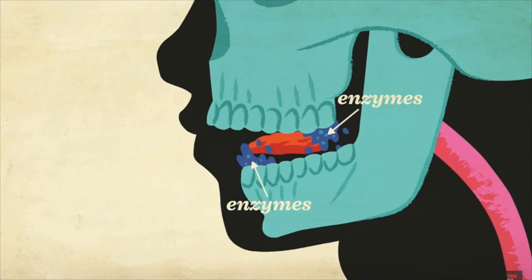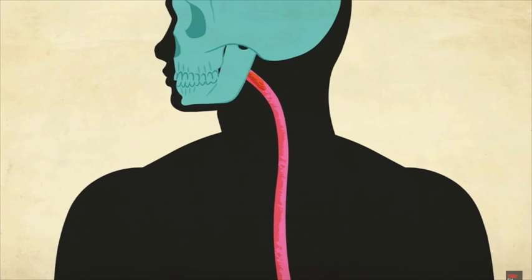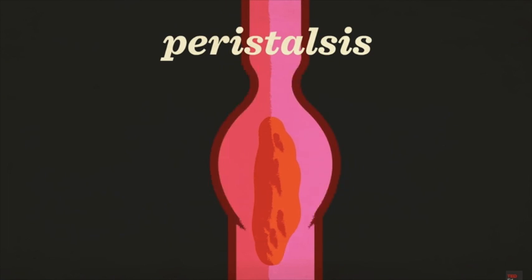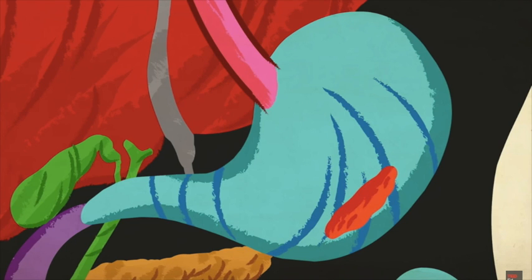The tongue helps in swallowing the bolus and it reaches the esophagus. The contracting waves known as peristalsis further push the bolus to the stomach. These waves are so strong that you can even eat upside down.